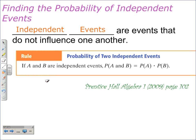Today's objective is finding the probabilities of independent events. That's one of two objectives in this entire lesson. Independent events are events that do not influence one another. When we find the probability of two independent events, we have a rule: if A and B are independent events, the probability of A and B is equal to the probability of A times the probability of B.